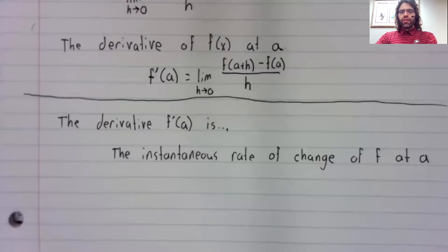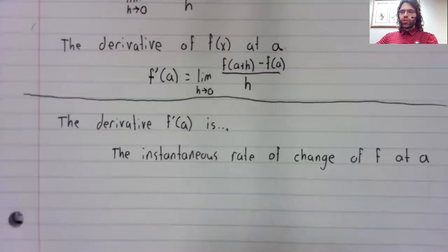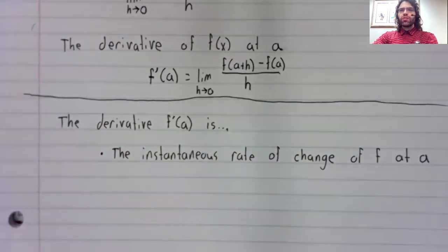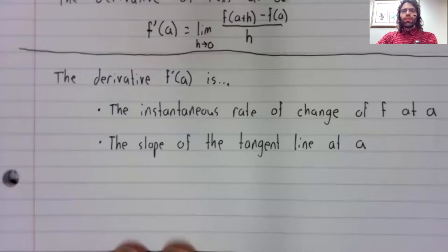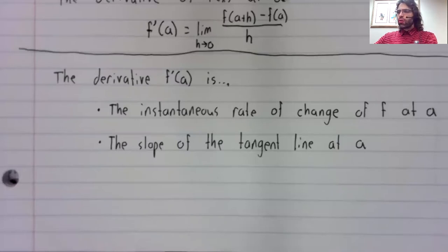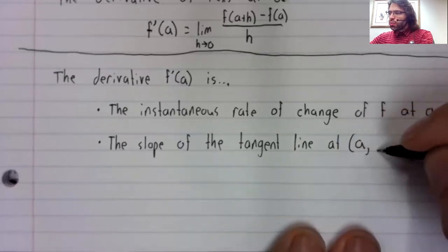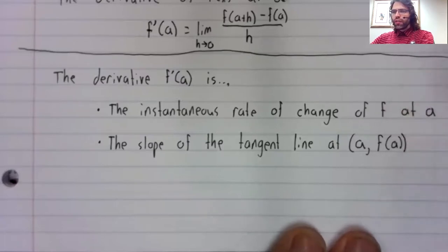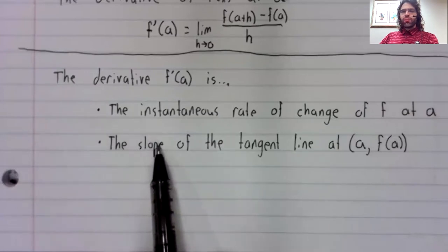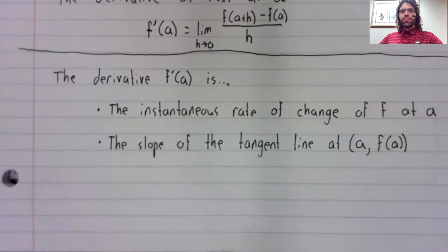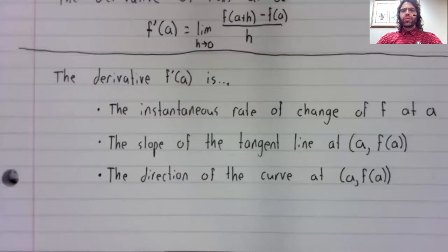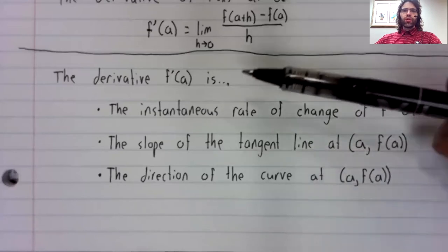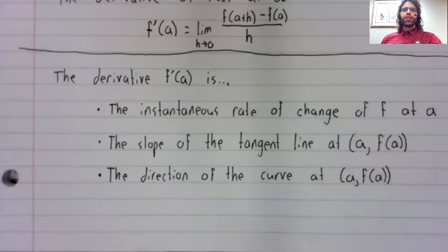The derivative is the instantaneous rate of change at a. It is also the slope of the line tangent to the curve at the point a comma f of a. This is sometimes rephrased as the direction of the curve at a comma f of a. So these together are four different ways of expressing the same concept.